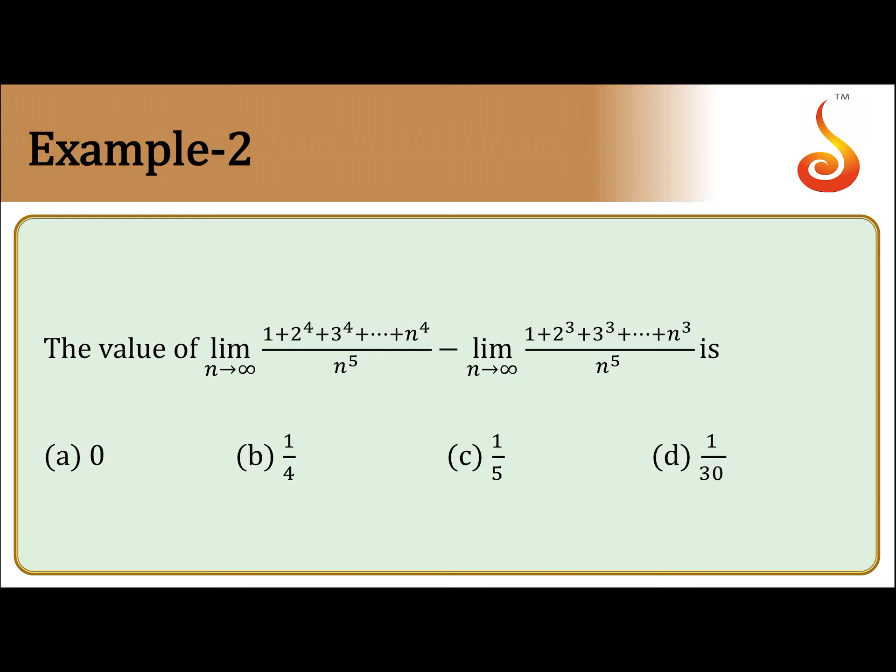This is a really interesting problem. If you see this one, this can be written as limit n tending to infinity summation r by n to the power 4 into 1 by n into 1 by n, because n to the power 5 is there, n to the power 4, r to the power 5. So this can be written as summation r equal to 1 to n.